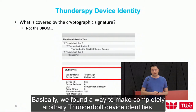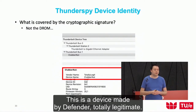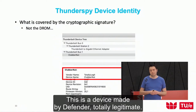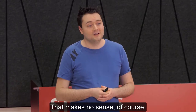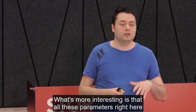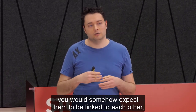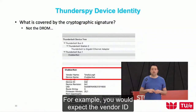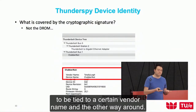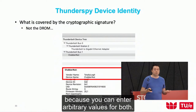We found a way to create completely arbitrary Thunderbolt device identities. What's more interesting is that all these parameters — you would expect them to be linked to each other, for example, expecting the vendor ID to be tied to a certain vendor name. During our research, we found that is clearly not the case, because you can enter arbitrary values for both.